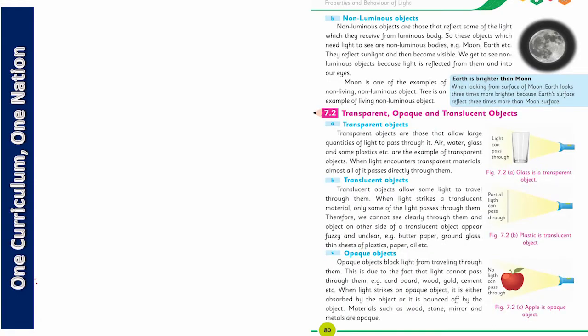Dear students, we studied about luminous and non-luminous objects in the previous class. Today we are going to study about three different kinds of objects — this is a very interesting topic and you will have seen a lot of examples in our daily life. Today we will study transparent objects, translucent objects, and opaque objects.